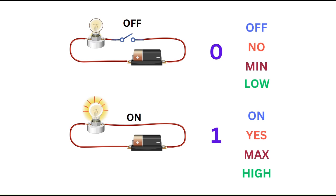In electronics, electric current can easily perform two actions: switching a circuit off or switching a circuit on. When the circuit is on, the bulb is glowing; when the circuit is off, the bulb is not glowing. These two states — on and off — can be distinguished very easily in electronics, and because these two states can be created, communicated, and understood in electronics, we can map them to the two symbols of binary numbers.